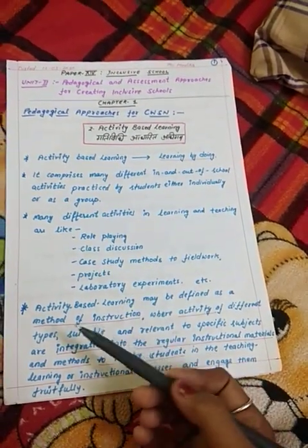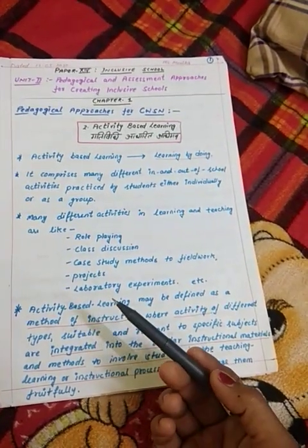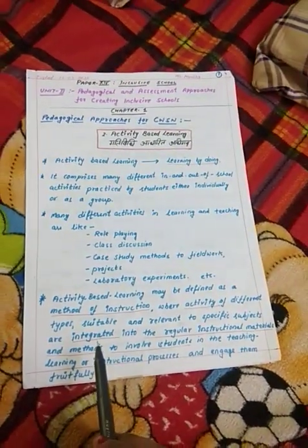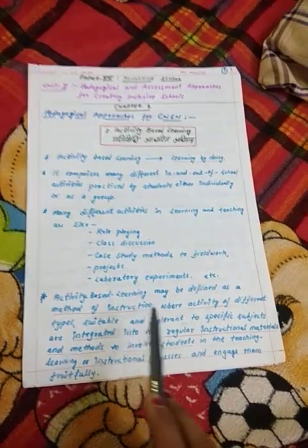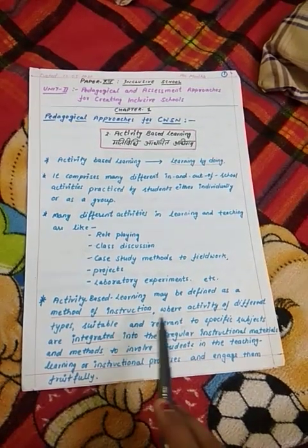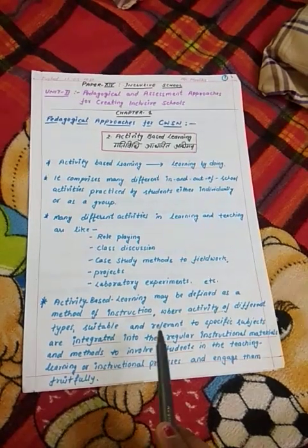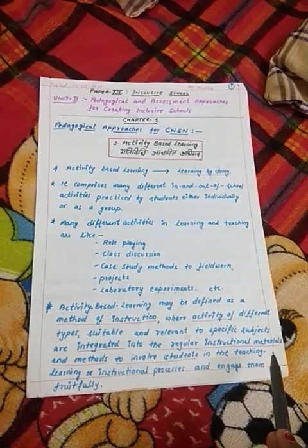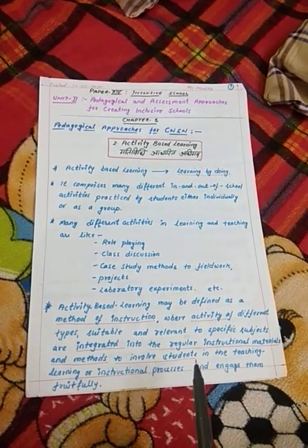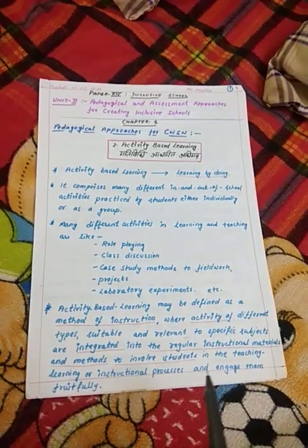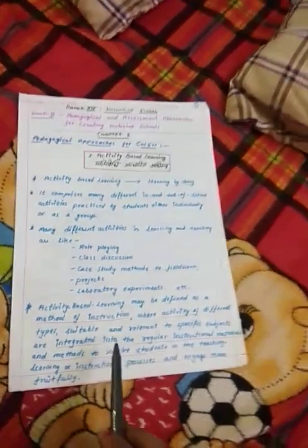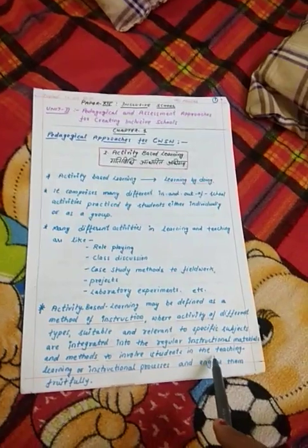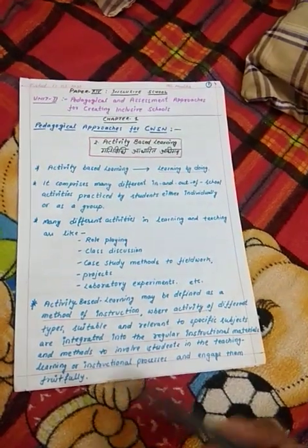So different activities like role play, class discussion, or laboratory experiment — where the child does it — is learning through activity. We call it Activity-Based Learning. Activity-Based Learning may be defined as a method of instruction where activities of different types, suitable and relevant to specific subjects, are integrated into the regular instructional materials and methods to involve students in the teaching, learning, or instructional processes and engage them fruitfully.